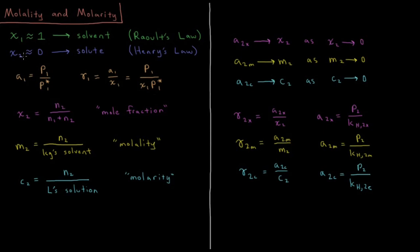The activity of component one, our solvent, is going to be equal to the vapor pressure of that component divided by the vapor pressure of the pure liquid of that component. The activity coefficient for our solvent is going to equal its activity divided by its mole fraction, which is equal to its vapor pressure divided by its mole fraction times the vapor pressure of the pure liquid. The activity coefficient is equal to one when the solution is ideal, and when the solution is ideal its activity is equal to its mole fraction.